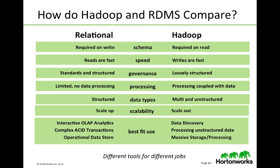Relational databases have standards and structure around governance; Hadoop is still loosely structured. A strict relational database has limited to no data processing, while with Hadoop you process and store at the same time. Relational databases use structured data types; Hadoop uses multi, structured, or unstructured. Relational databases scale up; Hadoop scales out. Best fit use cases: relational databases are suited for interactive OLAP analytics, complex ACID transactions, and operational data stores, while Hadoop is better built for data discovery, processing unstructured data, and massive storage and processing. These are different tools for different jobs — Hadoop will not replace databases.